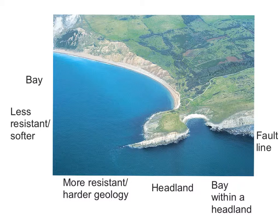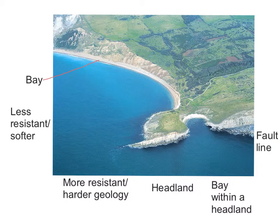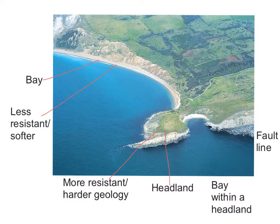Take a look at this photograph. When you're first presented with it you may have to comment on what you can see. The first obvious feature is a bay, which you can assume is made of less resistant, softer geology. In contrast, there is a headland which juts out from the mainland, and you can assume the geology is more resistant — it's a harder geology.